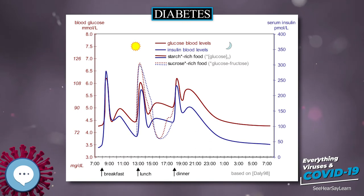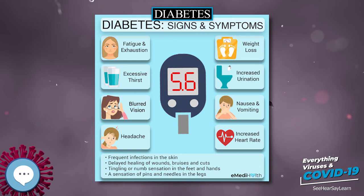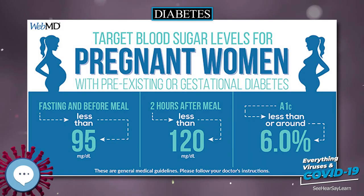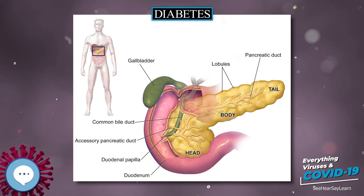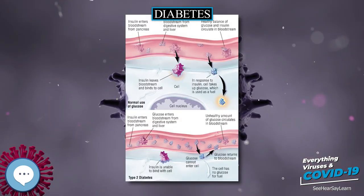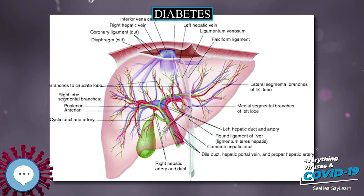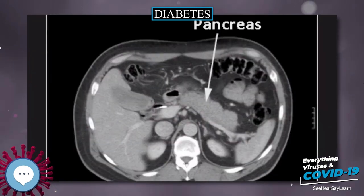There is no known preventive measure for type 1 diabetes. Type 2 diabetes, which accounts for 85 to 90 percent of all cases worldwide, can often be prevented or delayed by maintaining a normal body weight, engaging in physical activity, and eating a healthy diet. Higher levels of physical activity, more than 90 minutes per day, reduce the risk of diabetes by 28 percent. Dietary changes known to be effective include maintaining a diet rich in whole grains and fiber, and choosing good fats, such as polyunsaturated fats found in nuts, vegetable oils, and fish. Limiting sugary beverages and eating less red meat and other sources of saturated fat can also help prevent diabetes.